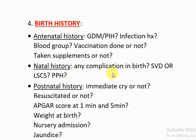Then comes the natal history. You would ask the mother whether there was any complication at the time of birth, whether it was a normal vaginal delivery or a lower segment Caesarean section. You would also ask if there was any history of PPH — postpartum hemorrhage — or any other infectious history at the time of the baby's birth.